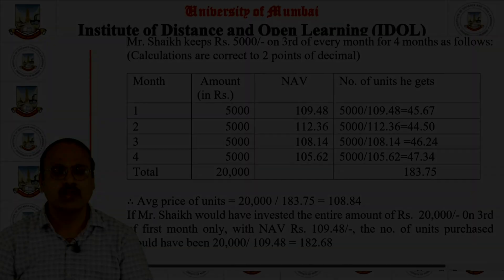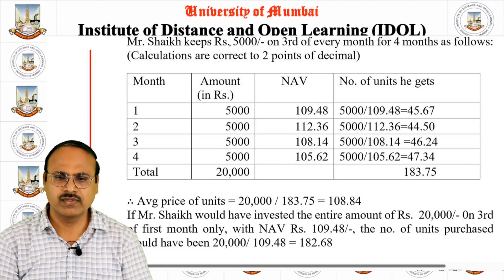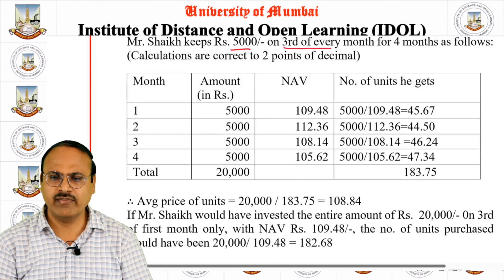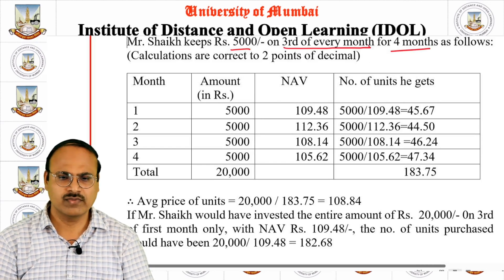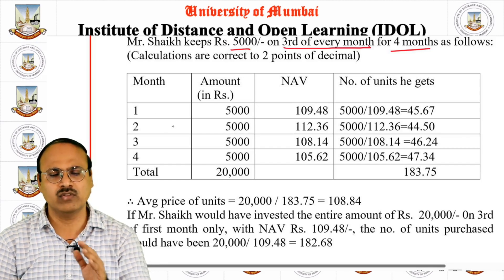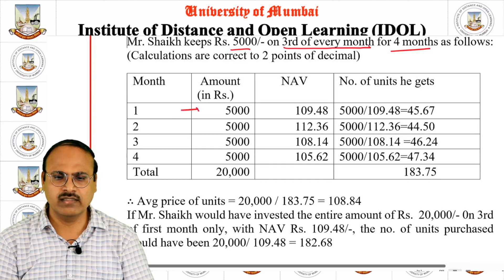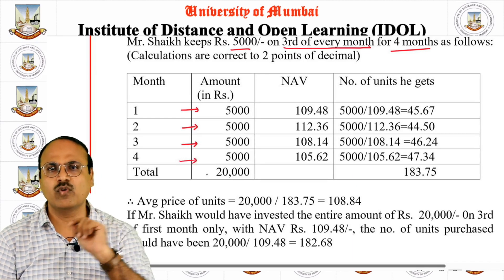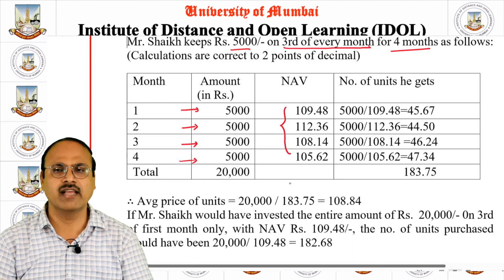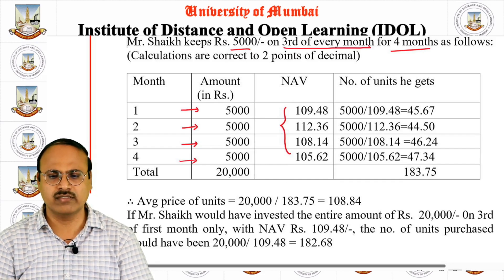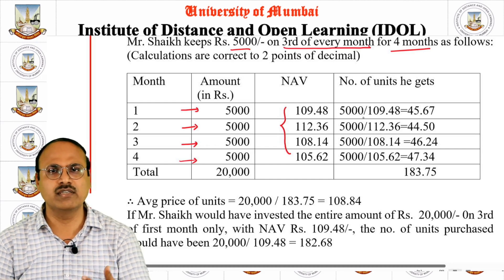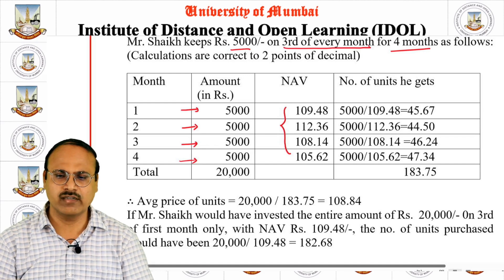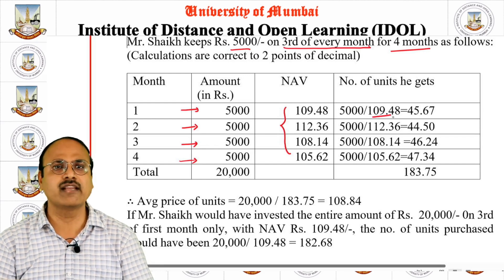Let us understand this concept with a simple example. Mr. Sheikh invests ₹5000 on the 3rd of every month for four months. The table on screen shows his monthly investment of ₹5000 each month. The NAV changes daily, so on the 3rd of each month the NAV values differ across the four months. The number of units purchased depends on the NAV on that particular date.